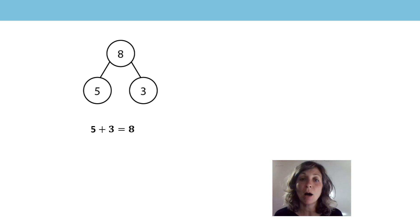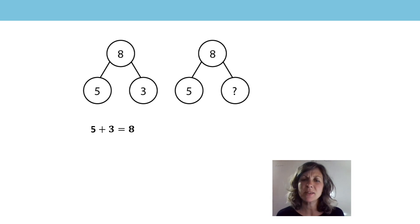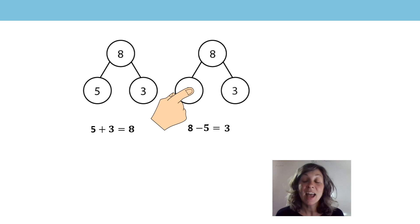Let's have a look at that in a part-part-whole diagram. I can see that 5 plus 3 is equal to 8: 5 is one part, 3 is another part, and the whole is 8. What's the missing number? Did you say it was 3? What about if I did 8 minus 5 — what would that give me? Did you say that would be 3? 8 minus 5 is equal to 3.